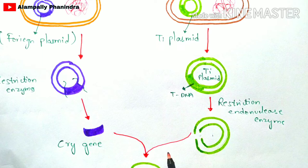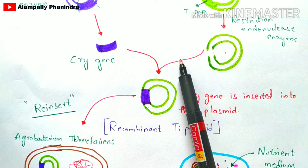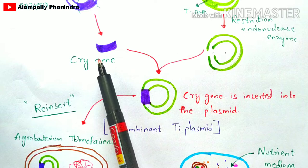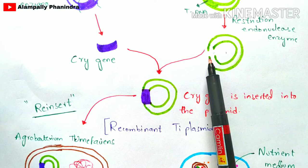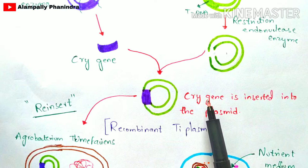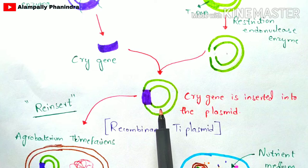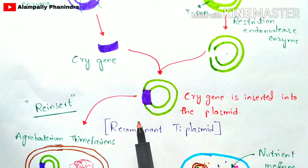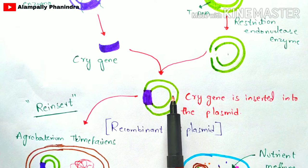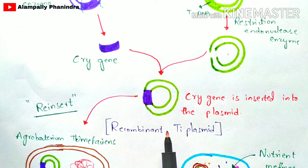Using recombinant DNA technology, by a microinjection process, the cry gene is inserted into the Ti plasmid. The resulting structure is called a recombinant Ti plasmid, where the cry gene has been inserted into the Ti plasmid using the microinjection technique. Microinjection is a technique highly used in DNA technology, and a link to the previous video explaining this technique will be given in the description box.